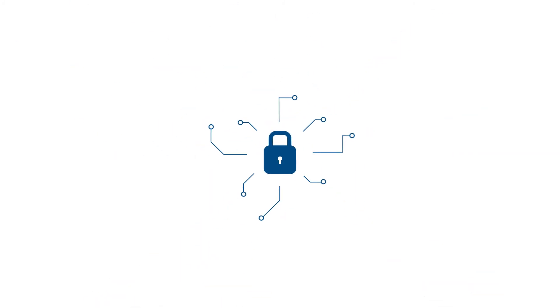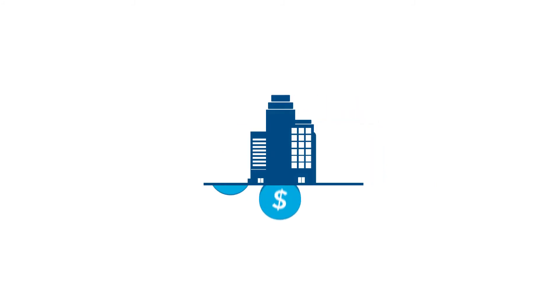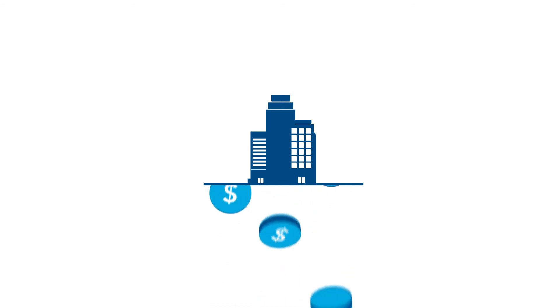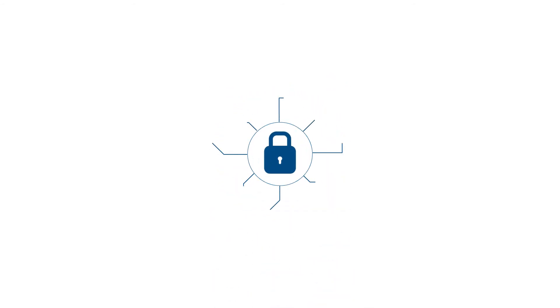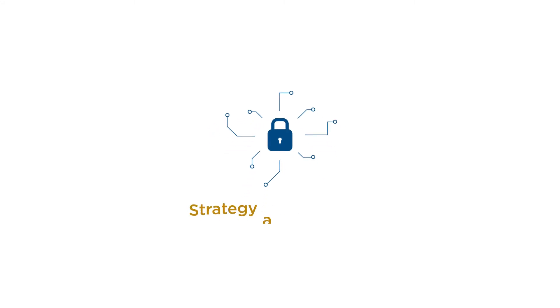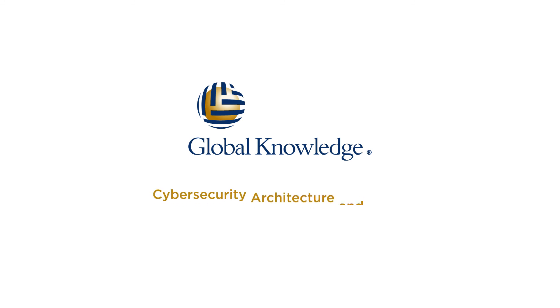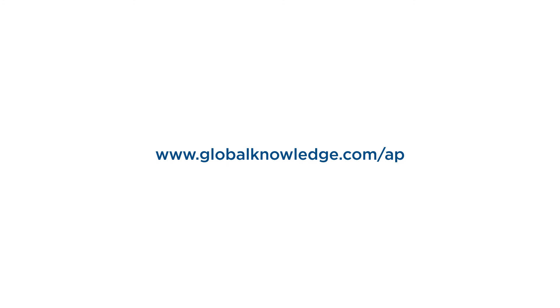Without a strong cybersecurity architecture and policy function, an organization is likely to waste money on products and projects that don't work and fail to meet their future needs. Conversely, an effective architecture and policy function can help an organization thrive by providing strategy and direction. Global Knowledge can help you meet your cybersecurity architecture and policy needs. Visit us at GlobalKnowledge.com to learn more.